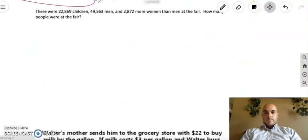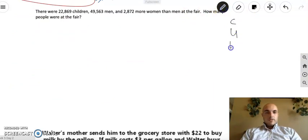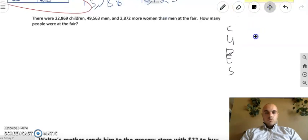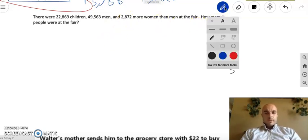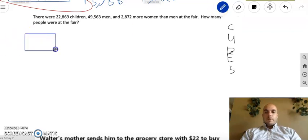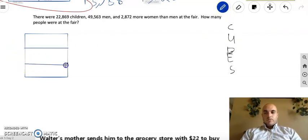OK. Let's go on to the next one. Let's get my cubes method set up here on the side. This marker does not like me today. That's OK. Just like that. So there were 22,869 children, 49,563 men, and 2,872 more women than men at the fair. How many people are at the fair? So you have children, men, and women. Well, you know what that calls for. It's time for my box, nice little chart there to organize three groups of people in a way that is easy to read and access.